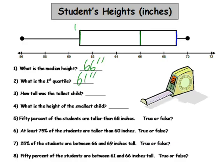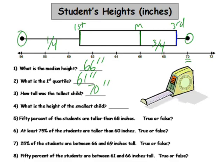Now remember, the first quartile gets its name because it's the first quarter of data, then the median is the second quarter, and the third quartile is the third quarter of data. How tall was the tallest child? The maximum was 70 inches. What is the height of the smallest child? The minimum value would be 56 inches.